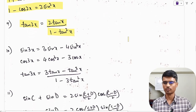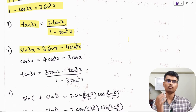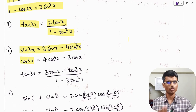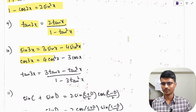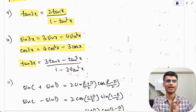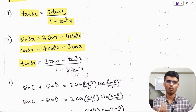The triple angle formulae: sin 3x = 3 sin x − 4 sin³x. Cos 3x = 4 cos³x − 3 cos x. Tan 3x = (3 tan x − tan³x) / (1 − 3 tan²x). All of these are very important.